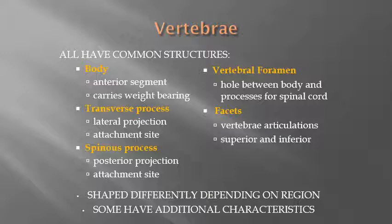You have the vertebral foramen — that's the hole between the body and the processes for the spinal cord, the big hole in the middle where the spinal cord passes through. And then you have the facets, which are the articulations — actual joints that form between the vertebrae. Besides the joint where the bodies come together, there are also the facet joints on the posterior aspect of the vertebrae. Each vertebra will have both a superior and inferior articulation off of that process. We'll note the different shapes because all these common structures will have slightly different characteristics depending on the region.